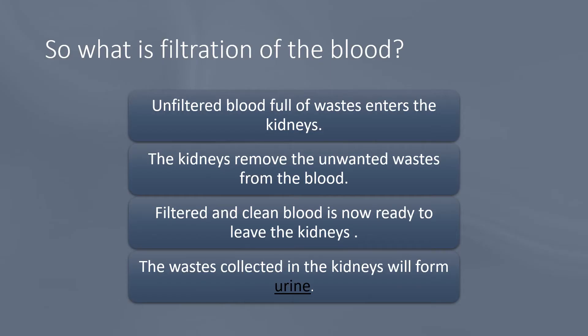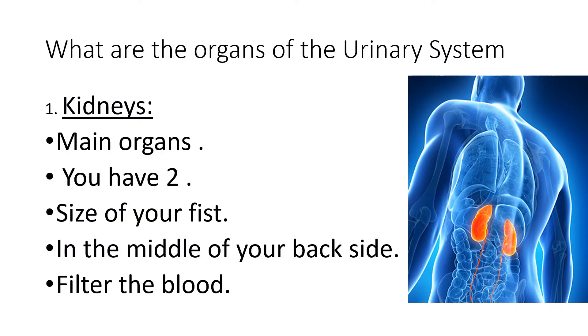Let's repeat: what is filtration of the blood? Filtration is a very important word when talking about the urinary system. Unfiltered blood that's full of waste enters your kidneys first. Then the kidneys, with the tiny nephrons inside them, remove all this unwanted waste from your blood. The filtered clean blood is then ready to leave the kidneys and circulate in your body once again, and all the waste collected in the kidneys forms urine.